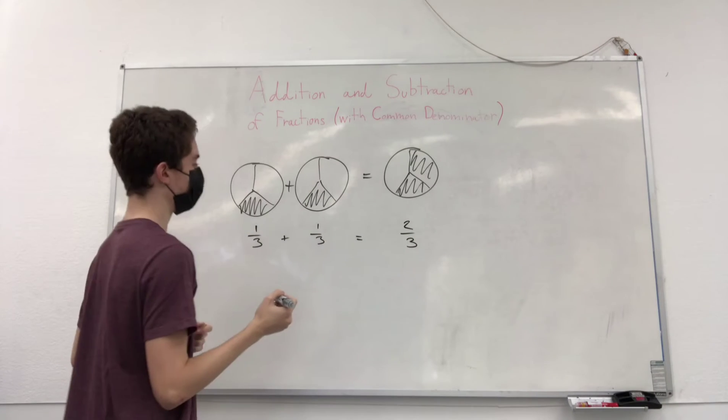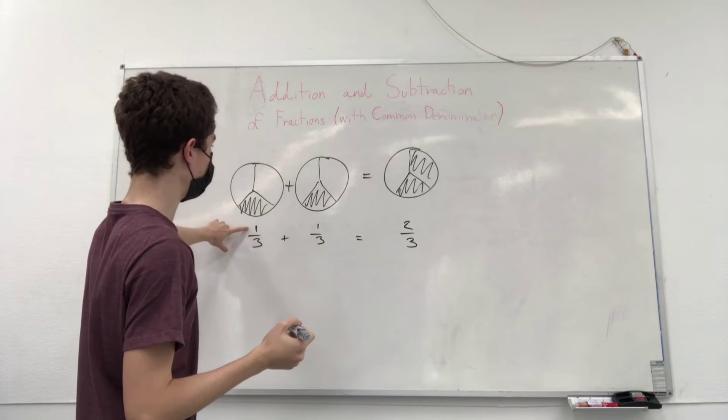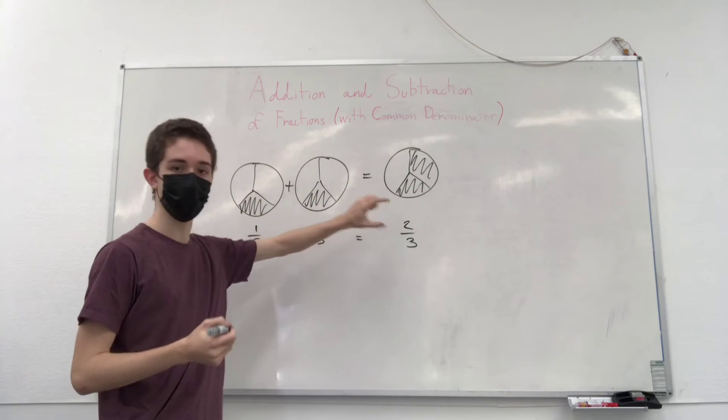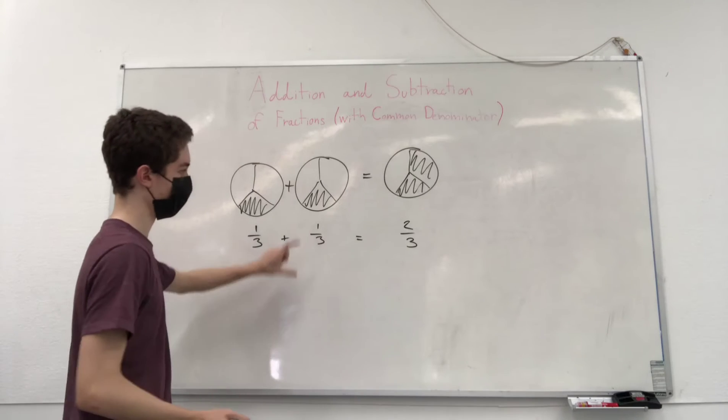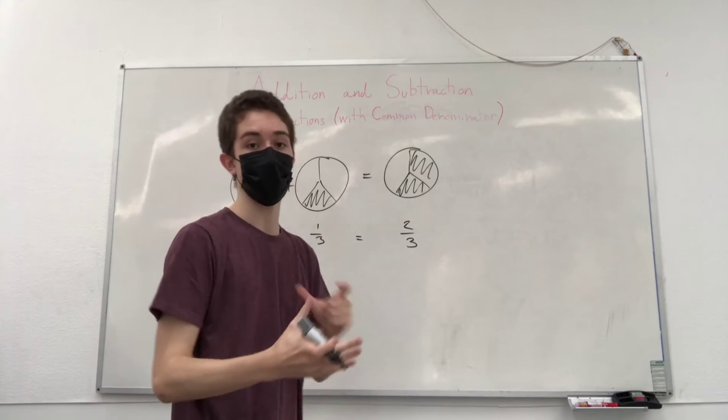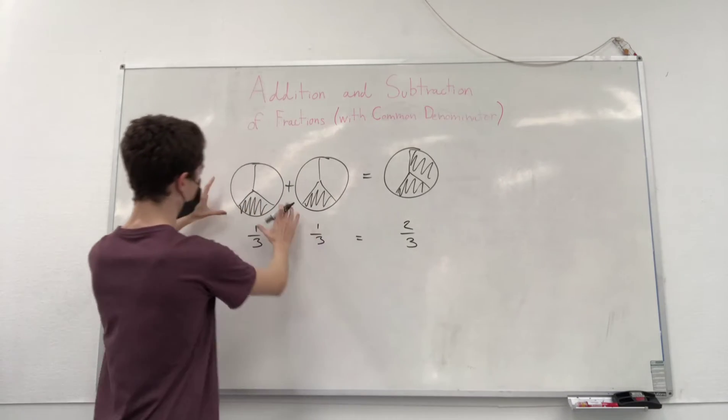And here you see that you only added the top parts or the numerators of the fractions. And that's what you do when you're adding fractions with the same denominator, when you're dealing with wholes that have the same number of parts, right?